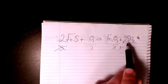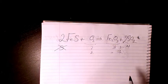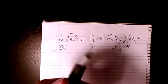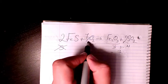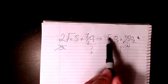So we have seven in this side and we have two in this side. So in order to balance oxygen, we need to multiply it by seven over two.